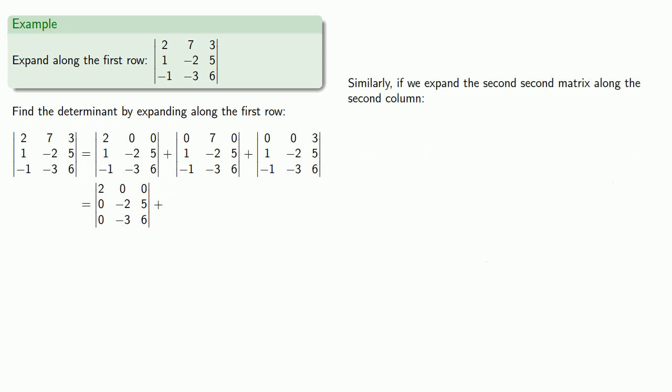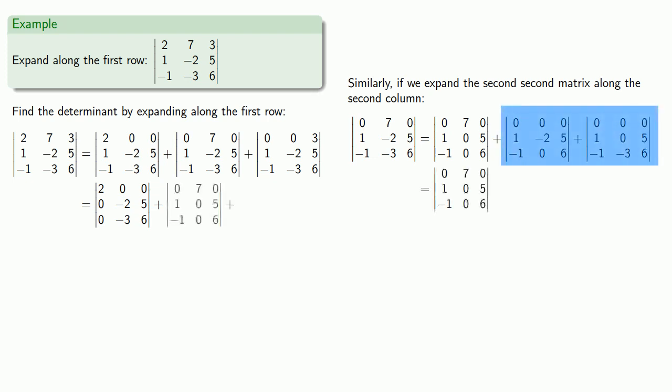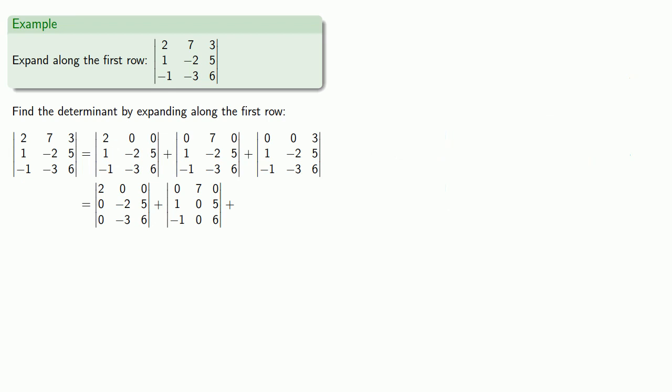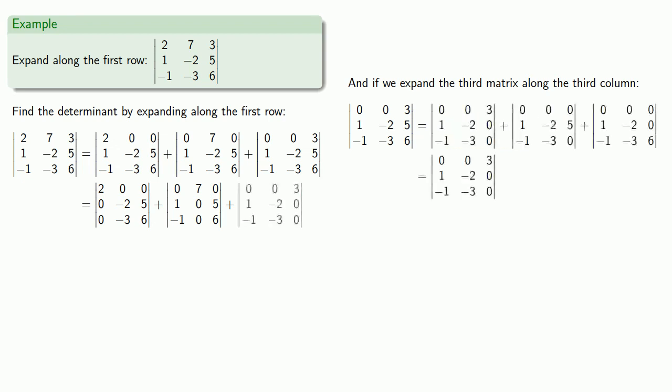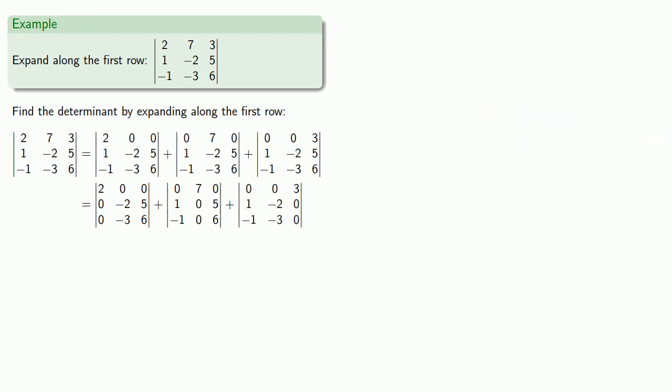Similarly, if we expand the second matrix along the second column, we get... And again, the row of zeros means that these two matrices don't matter. And that third matrix will be... And so the determinant is expressible in terms of three other determinants. And so we can apply our theorem.